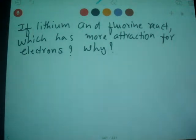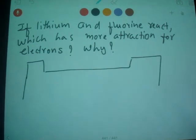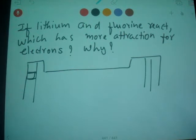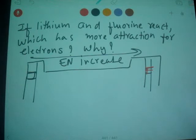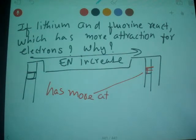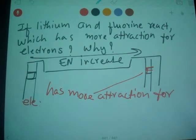Remember, when you look at the trend, lithium is somewhere here in the periodic table and fluorine is somewhere here. When you go across this way, EN increases — that's the trend. So fluorine is highly electronegative, and fluorine has more attraction for electrons than does lithium.